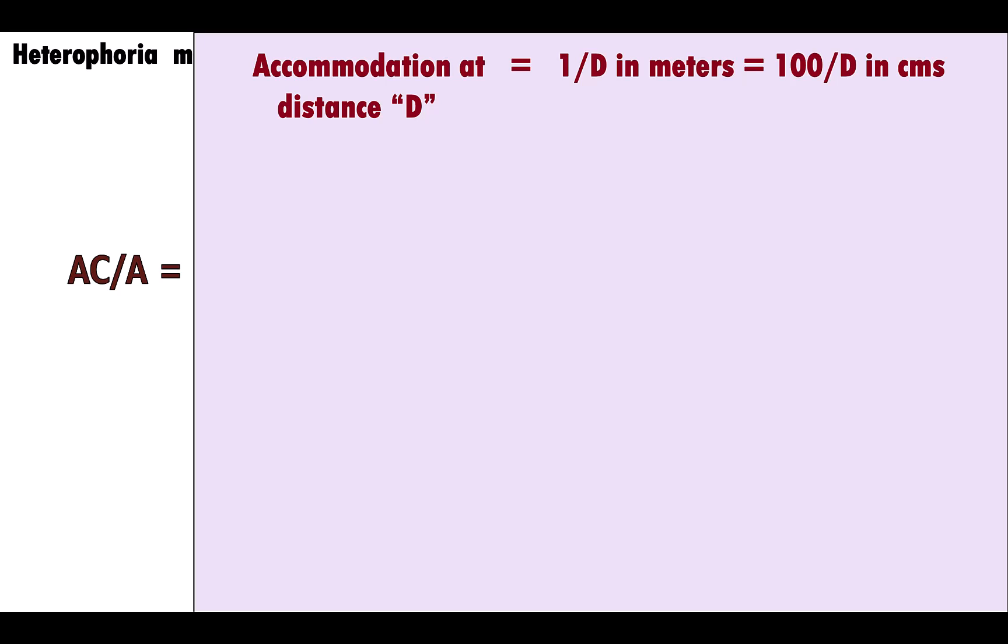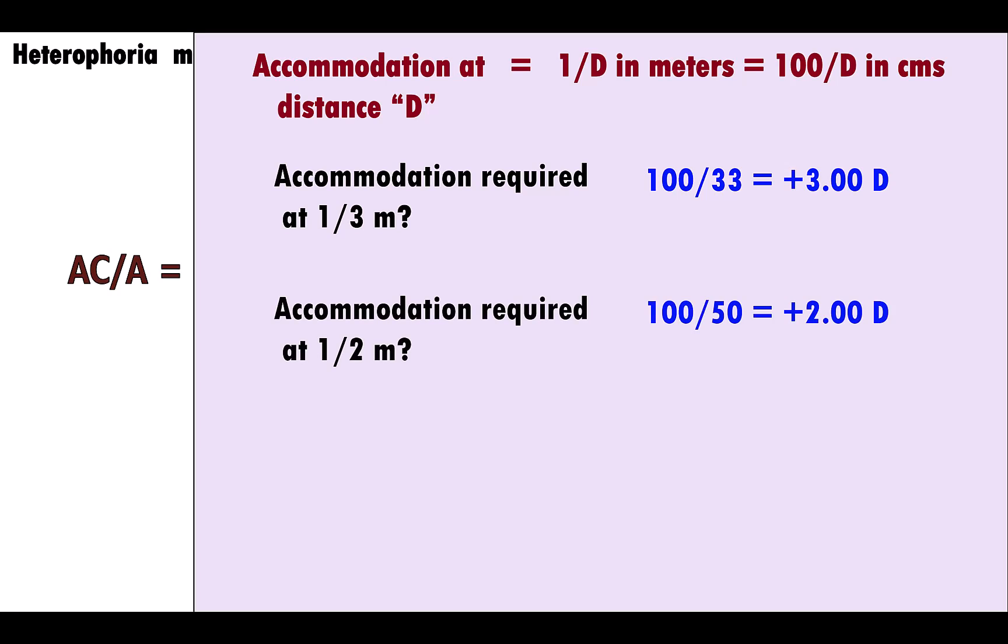Accommodation in diopters required at a particular distance is the reciprocal of that distance in meters, or 100 divided by that distance in centimeters. So at 33 centimeters, the accommodation required is plus 3 diopters; at 50 centimeters, plus 2 diopters; and at 1 meter, plus 1 diopter.